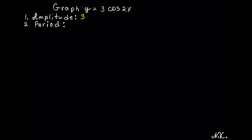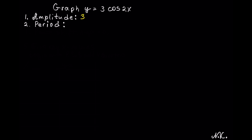The next thing we need to do is calculate the period. To do so, we take 2π and divide it by the coefficient of x, which is 2. The 2s cancel and this gives us π, so the period is equal to π.